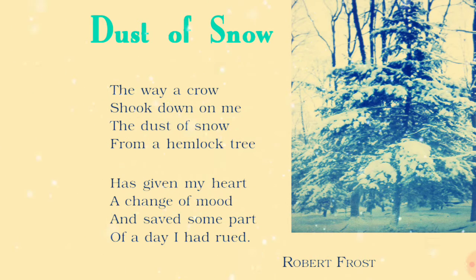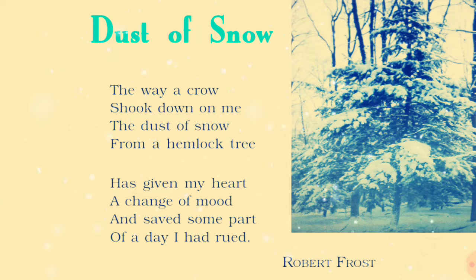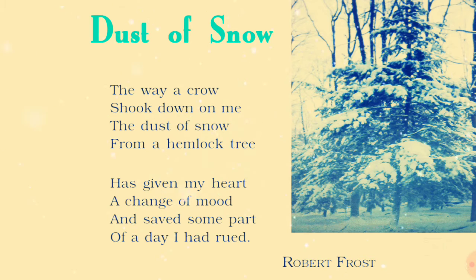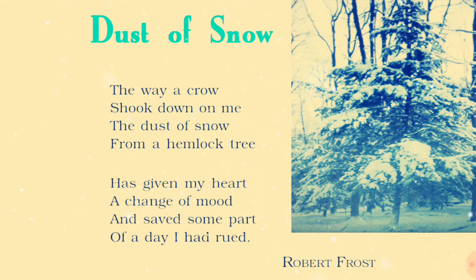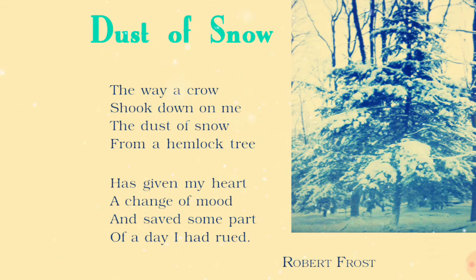Now we will talk about the last four lines. The rhyming scheme here uses the words: heart, part, mood, and rued. Heart and part will both be C, and mood and rued will both be D. So the rhyme scheme of the last four lines is C, D, C, D. This is also a poetic device. And since heart and mood have no punctuation between them, enjambment is also the poetic device here.